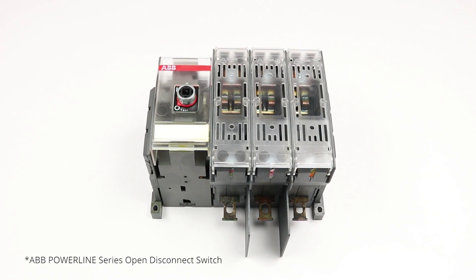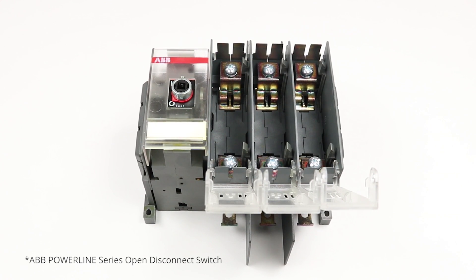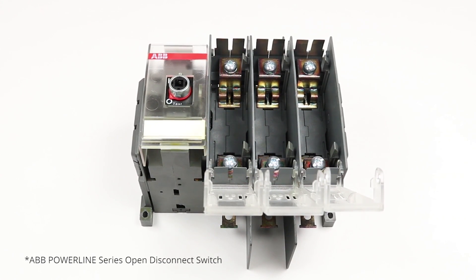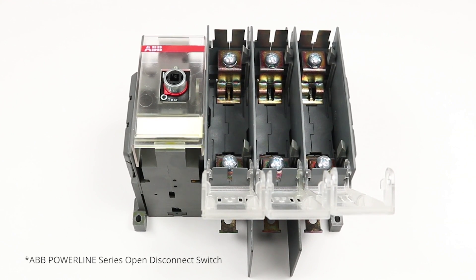Fusible disconnect switches combine fuses with the switch in a single enclosure, which provides an easy way to manually open and close the circuit while the fuse protects against overcurrent.